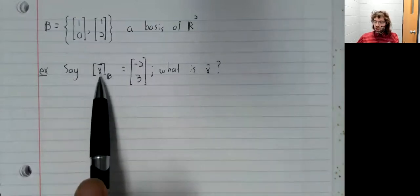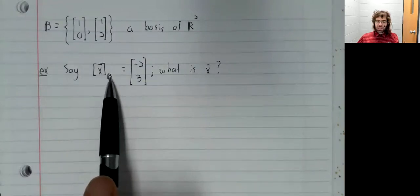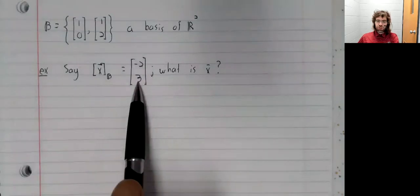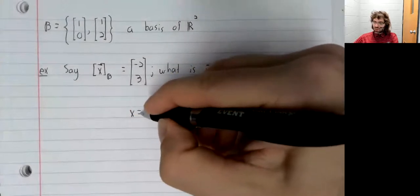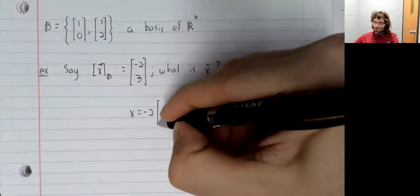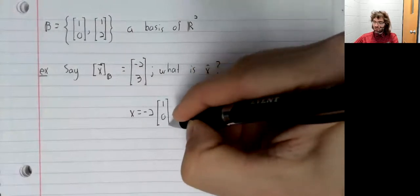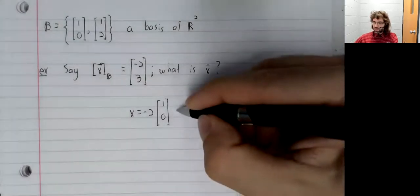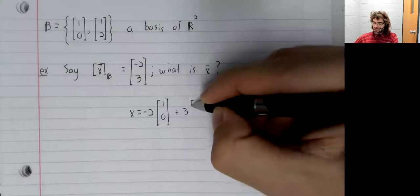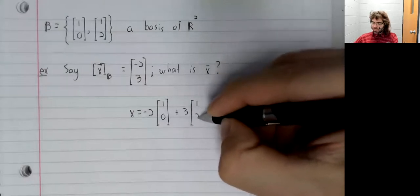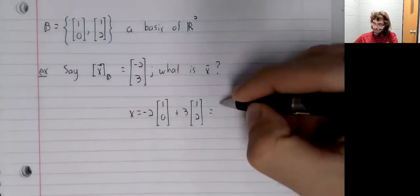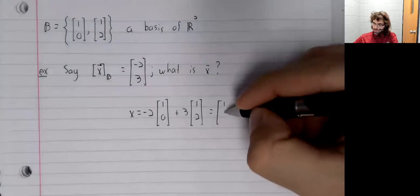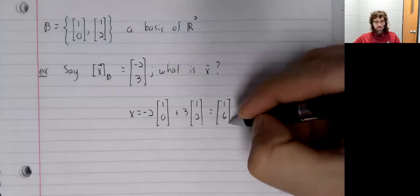Saying that the coordinate vector of x with respect to b is negative 2, 3 is telling you that x is negative 2 times the first basis vector, plus 3 times the second basis vector, which works out to be 1, 6.